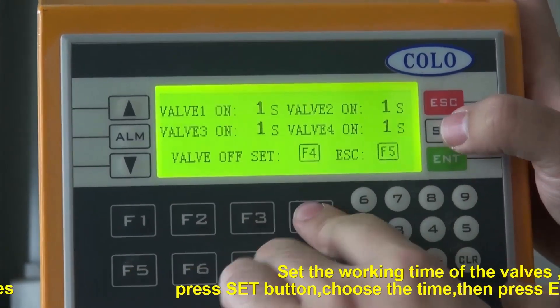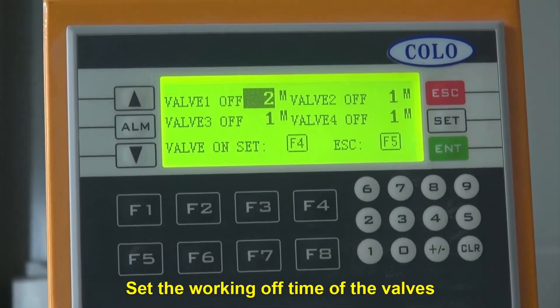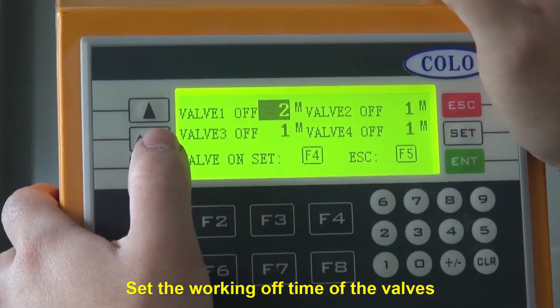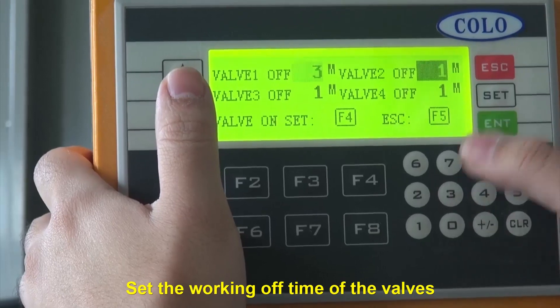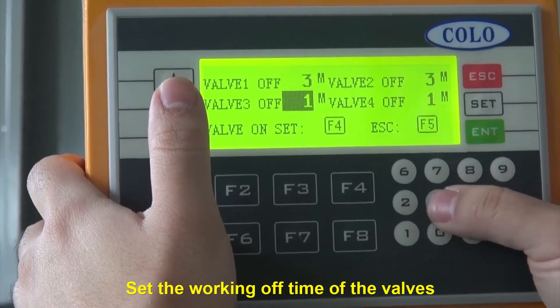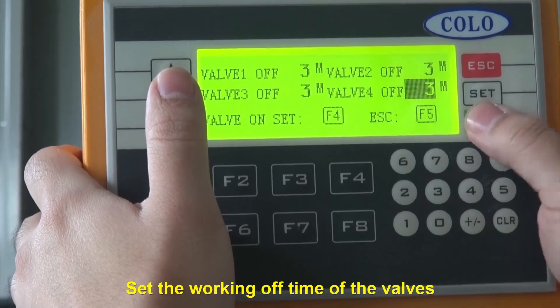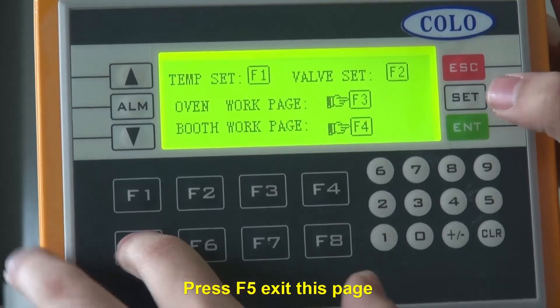Press the SET button, choose the time, then press the ENT button. Set the working off time of the valves. Press F5 to exit this page.